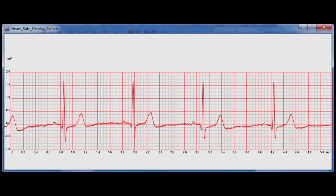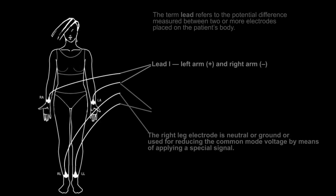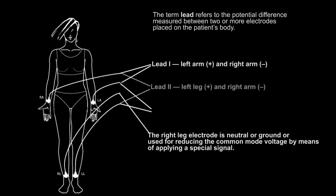The magnitude range of voltage is only 100 microvolts to about 5 millivolts. The term lead refers to the potential difference measured between two or more electrodes placed on the patient's body.